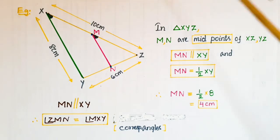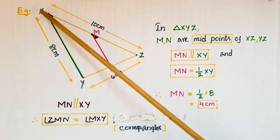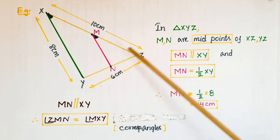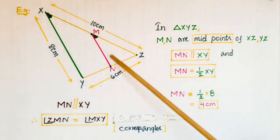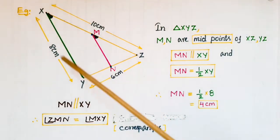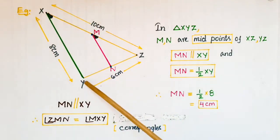This is an example. If you take a triangle XYZ where M is the midpoint of XZ and N is the midpoint of YZ, then as per the Midpoint Theorem, MN is parallel to the third side XY. So MN is parallel to XY and MN equals half of XY.